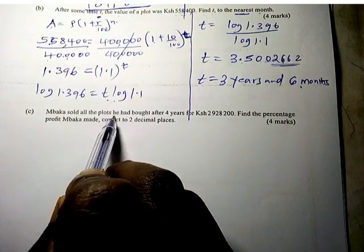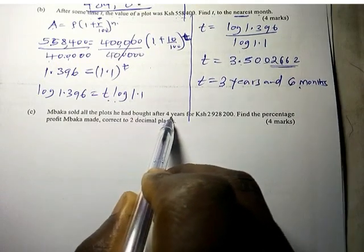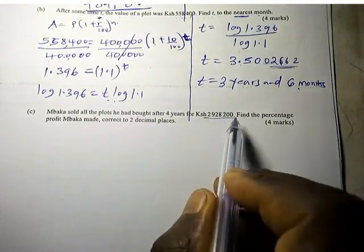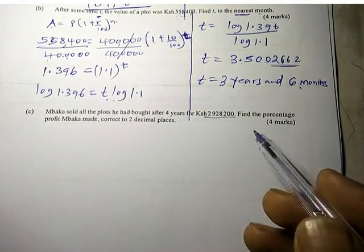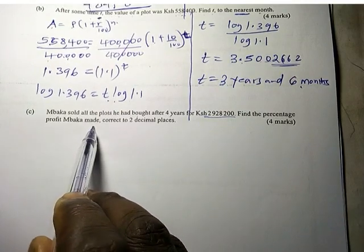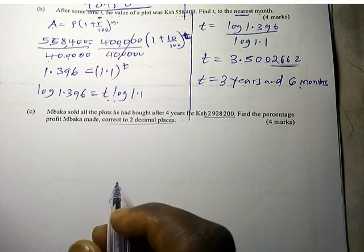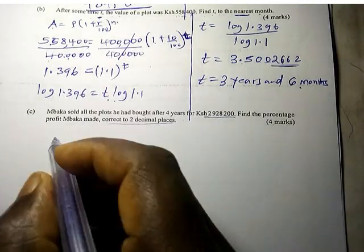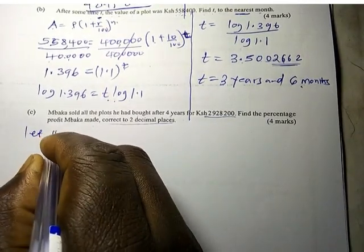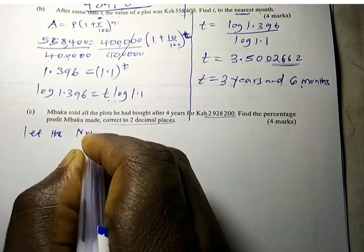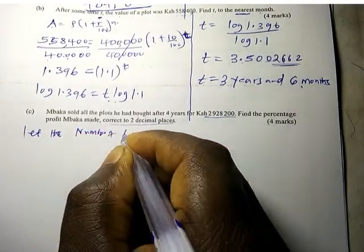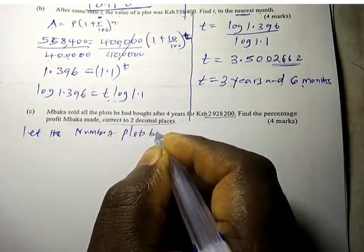Mbaka sold all the plots he had bought after 4 years for Kenya Shillings 2,928,200 total. Find the percentage profit Mbaka made, correct to 2 decimal places. So what we don't know is how many plots Mbaka had.